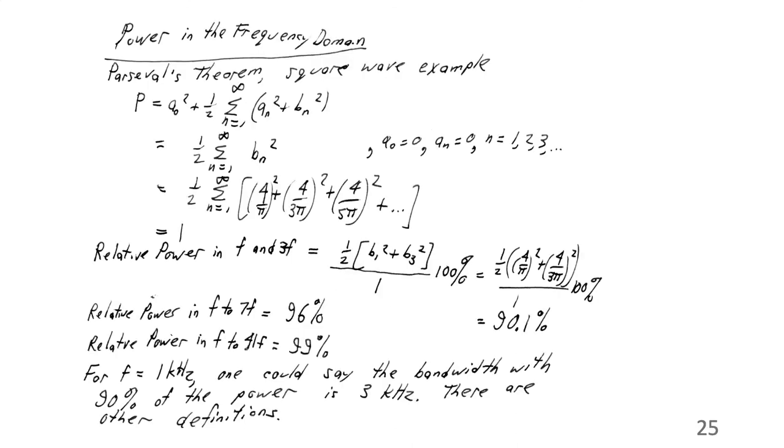In terms of power in the frequency domain, Parseval's theorem for the square wave example was shown here. We evaluated that a 0 squared plus 1 half, the sum from n equals 1 to infinity, a n squared plus b n squared. And we get b n squared and the a coefficients are 0. So we got a half, the sum from n equals 1 to infinity, 4 over pi squared, 4 over 3 pi squared, 4 over 5 pi squared, and so on. And the sum of those has to be 1 because it has to equal the time domain for this square wave example.